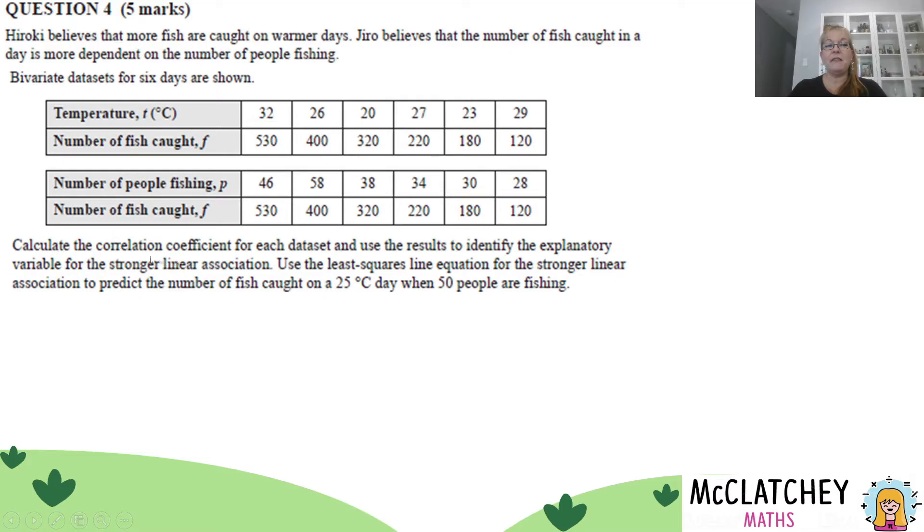We first need to calculate the correlation coefficient for each data set and use the results to identify the explanatory variable for the stronger linear association. There's a couple of steps here. Then we're going to come up with the least squares line equation for the stronger linear association to predict the number of fish caught on a 25 degree day when 50 people are fishing.